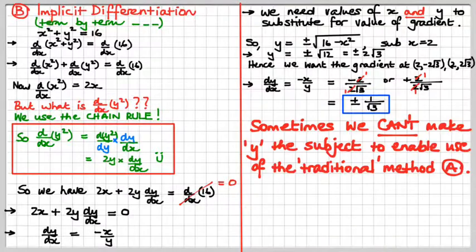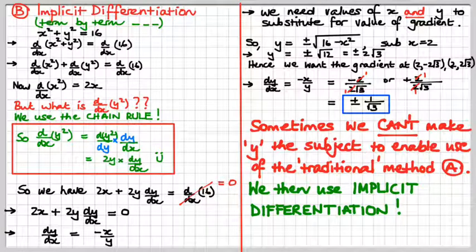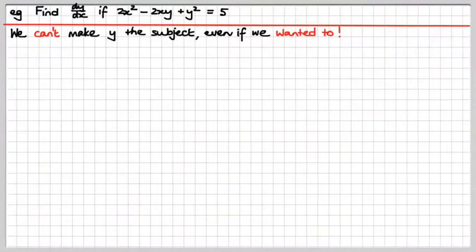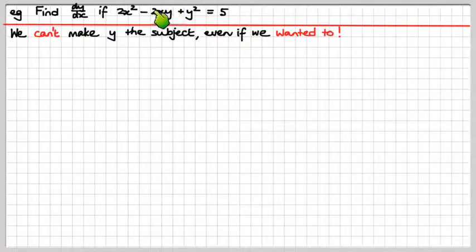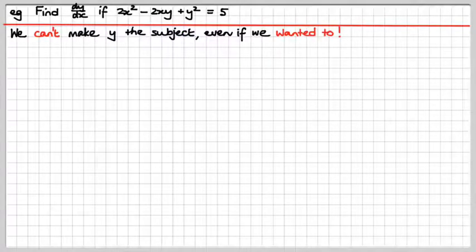I'll show you where implicit differentiation really comes into its own. Sometimes we can't make y the subject to use the traditional method. So, what do we do? Implicit differentiation comes to the rescue. We're going to find dy/dx if 2x squared minus 2xy plus y squared equals 5. X's and Y's are all tangled up — it's a mess. Just let it go and do implicit differentiation. It's term by term and saves you all the hassle.